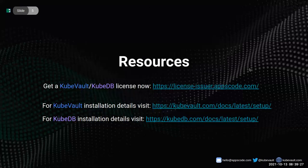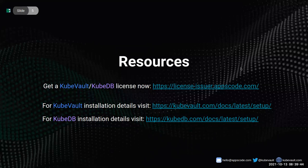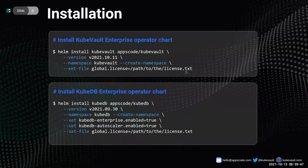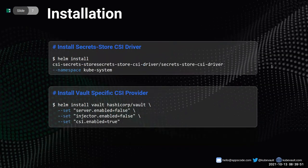I've provided the resources you need to get started with KubeDB and KubeVault — you can get your 30-day trial license from the link provided, and also get the installation guide from the link. I have already installed the KubeVault and KubeDB enterprise operator chart in my system, and I've also installed the Secret Store CSI driver and the vault-specific CSI provider that I'm going to use later in this demo.